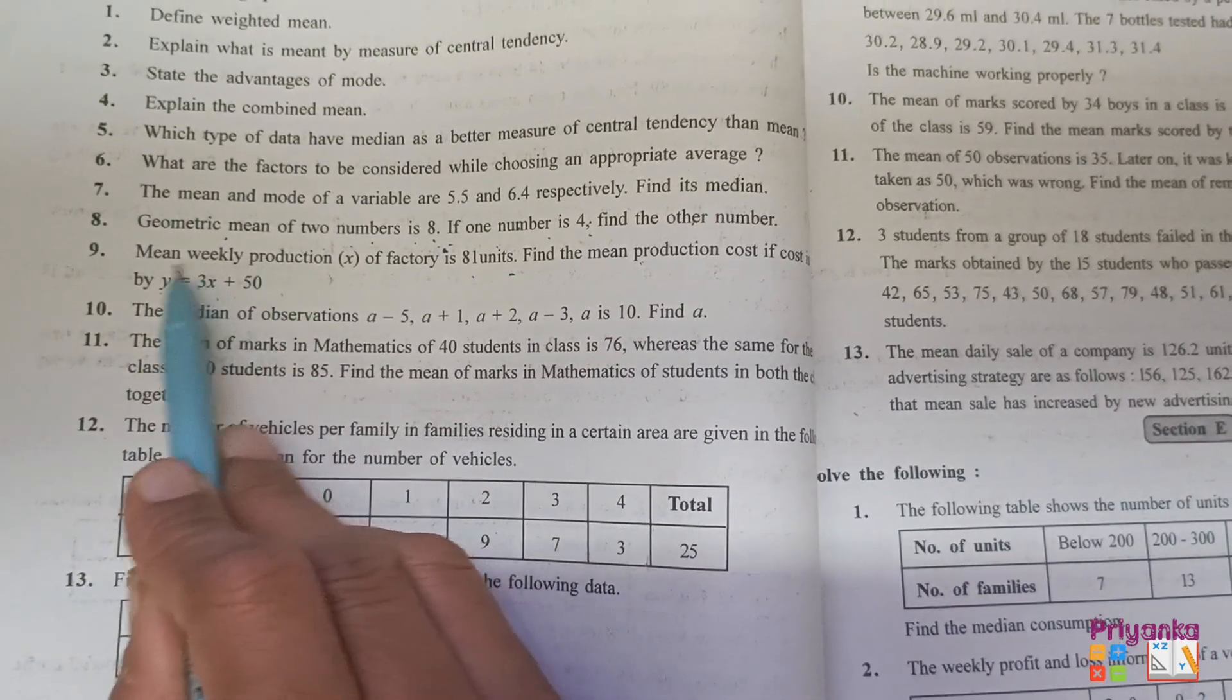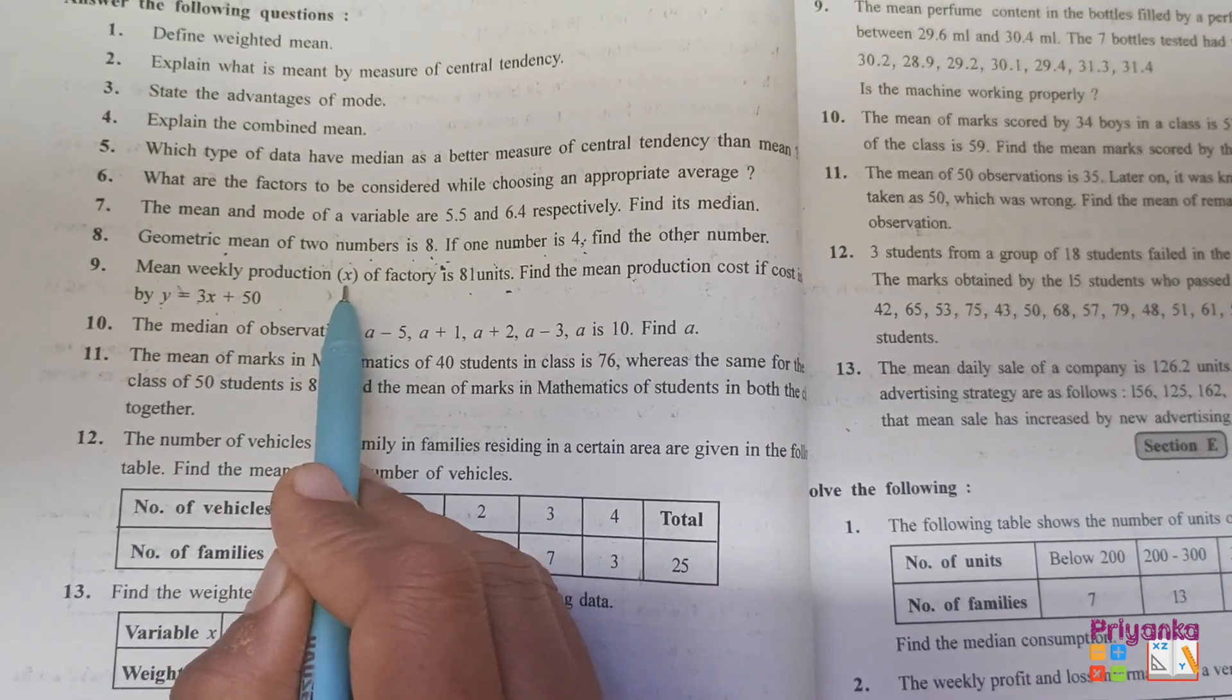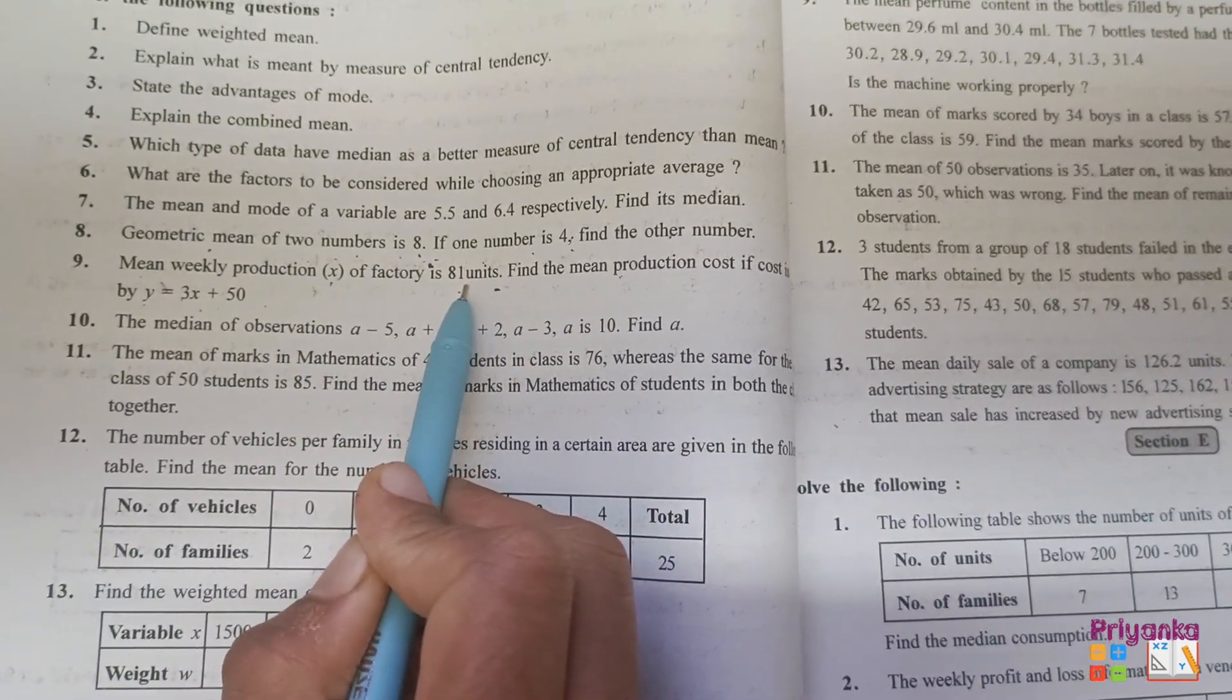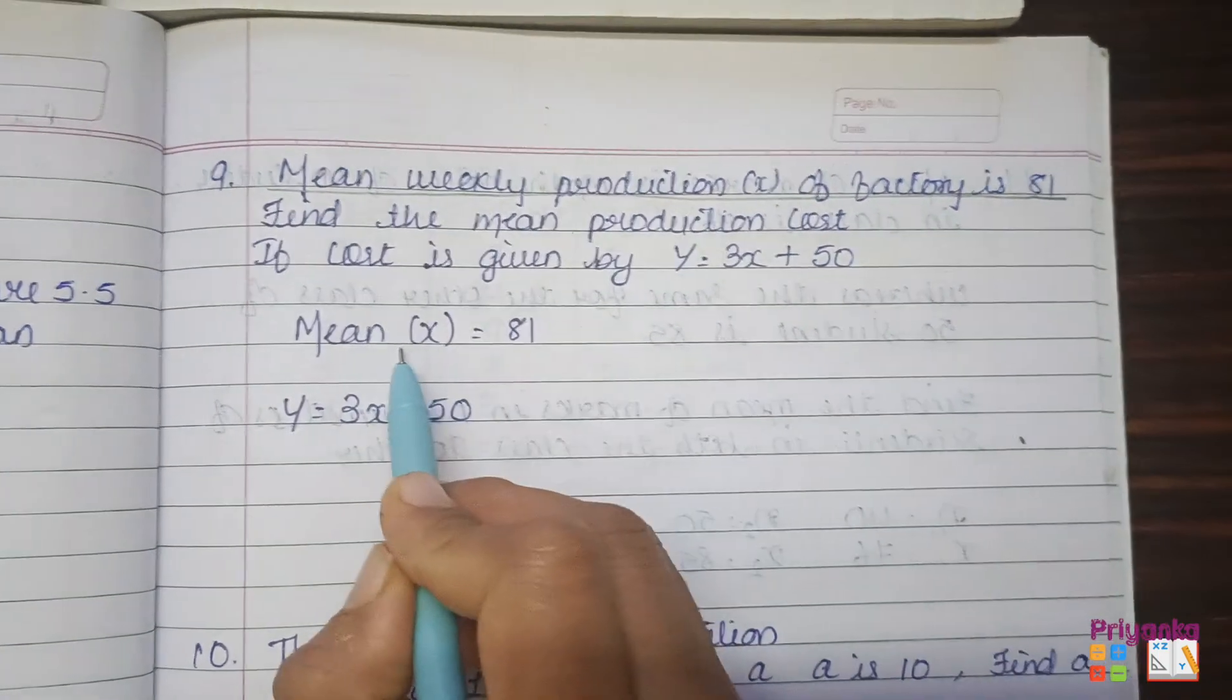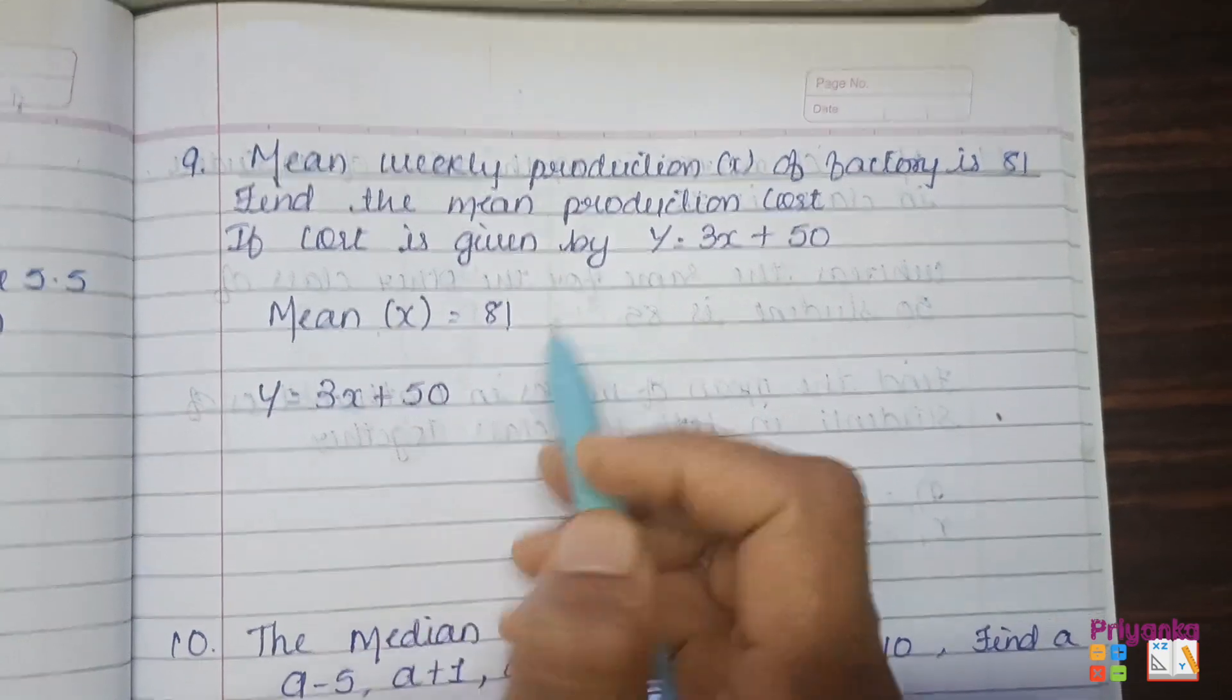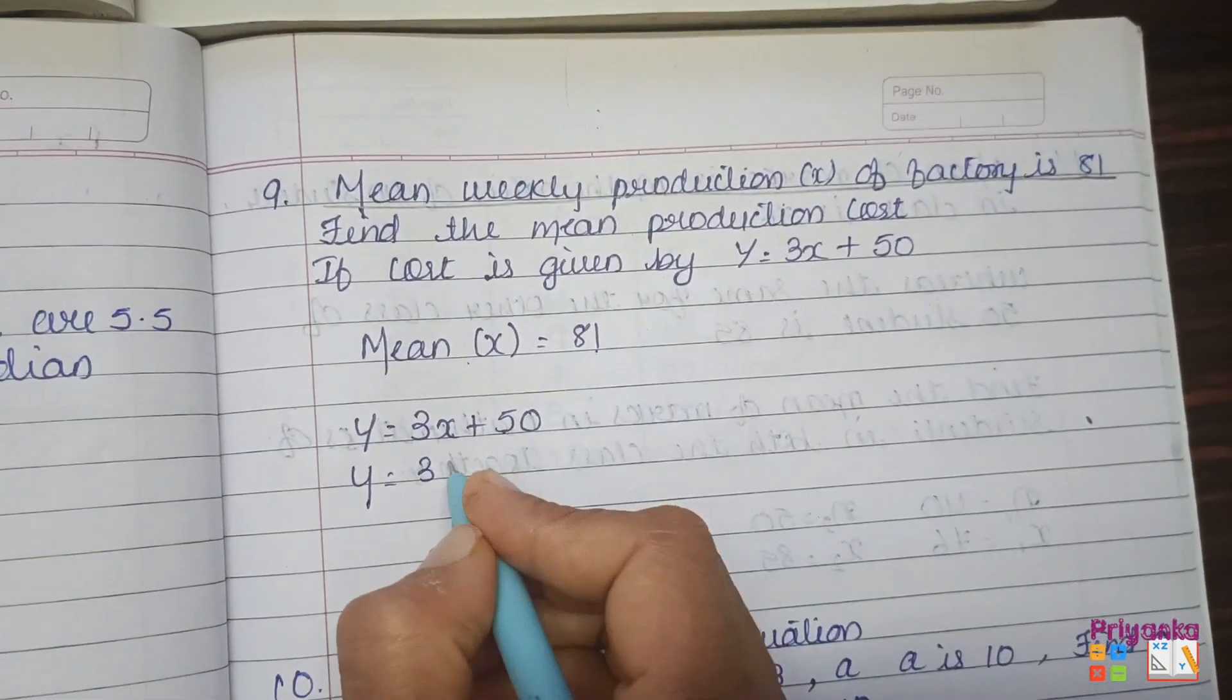So here the equation is given and mean has been shown as x and the value of x is already given. Very simple. Just keep this equation in your book. Just take this equation and as the value of x is already given, you just have to keep the value of x.